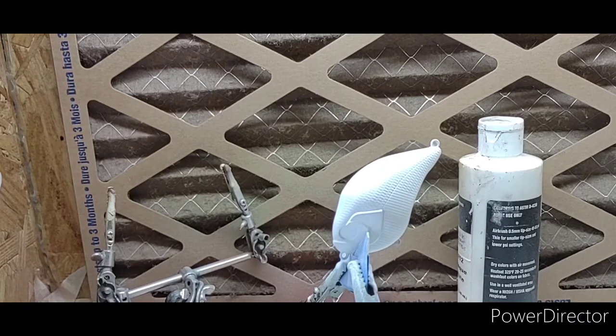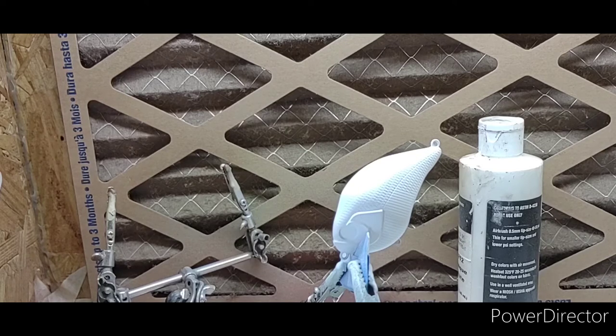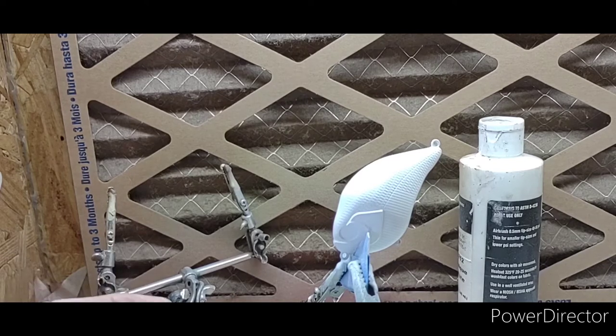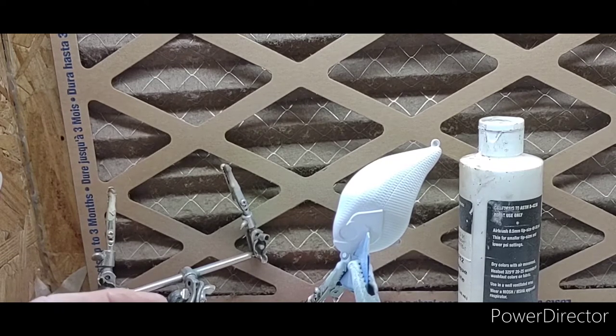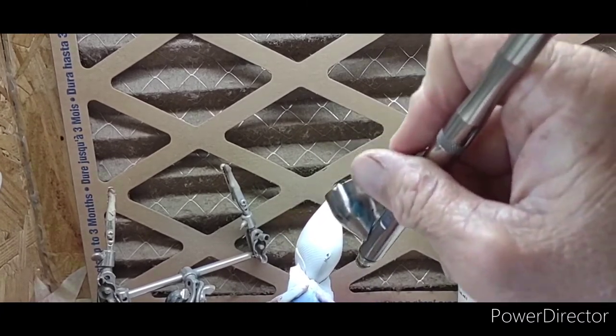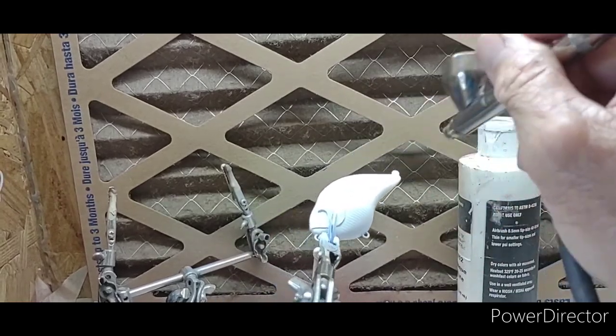Our second color is gonna be Wicked pearlized white and we're gonna spray this all over the whole bait. But I found out that this shad pattern, I fish a lake which I'm gonna go fish tomorrow, I fish a lake that this darker shinier color works best.